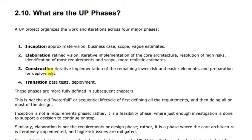The next phase is Construction — the third phase. In Construction, we do the iterative implementation of the remaining lower-risk and easier elements. We do the implementation and deployment and start to build our system.